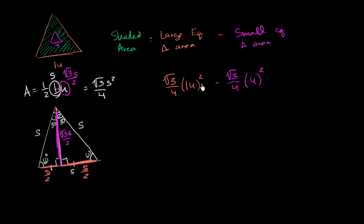We could factor out a square root of 3 over 4. So this is going to be equal to square root of 3 over 4 times 14 squared minus 4 squared, which, of course, we know this to be 16.